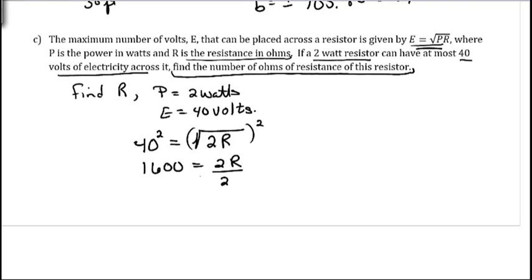And then, to finish solving for R, we just divide by 2 on both sides. So, we get R is equal to 800. And resistance, again, is in ohms.